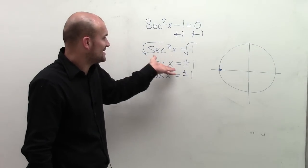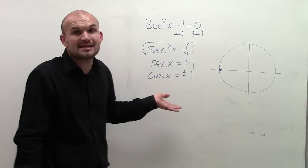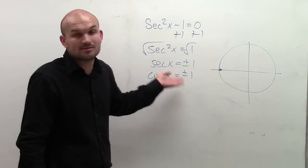So really, secant of ±1 gives the same values as cosx, which is ±1.